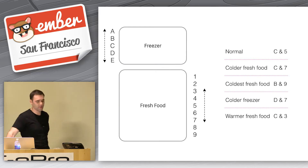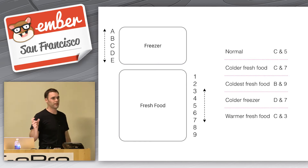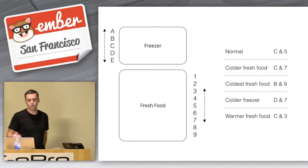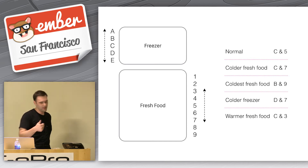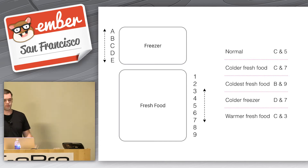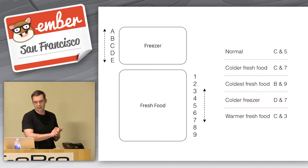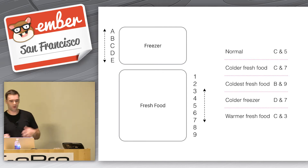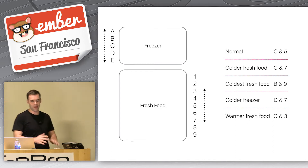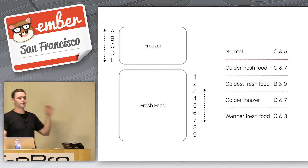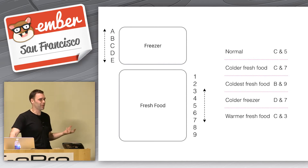There's this little instruction sheet that goes with it. If you want normal coldness in both, that's C and 5. If you want your fresh food to be colder, crank the fresh food thing up to 7. For the coldest fresh food, adjust your freezer to B and crank up your fresh food more to 9. If you want a colder freezer, turn your freezer to D and back your fresh food off to 7. If you want warmer fresh food, crank it down to 3 and then go back to C. At this point it just makes no sense — there's clearly a huge mismatch in what's going on with these controls.